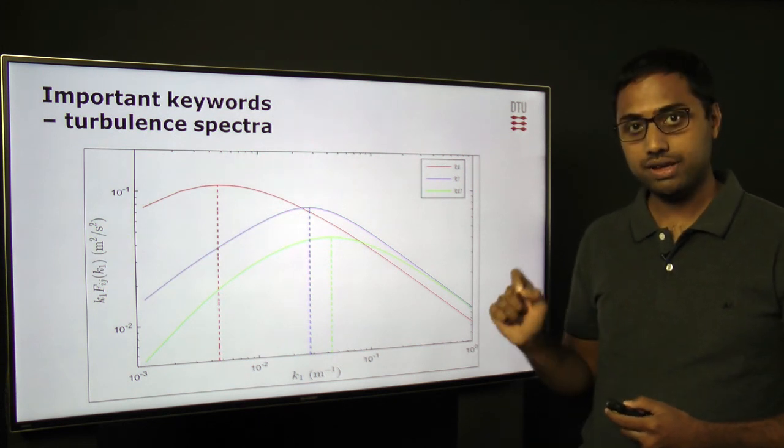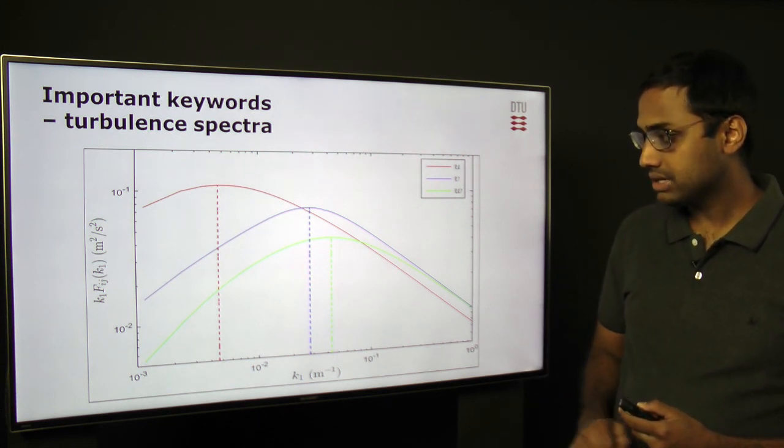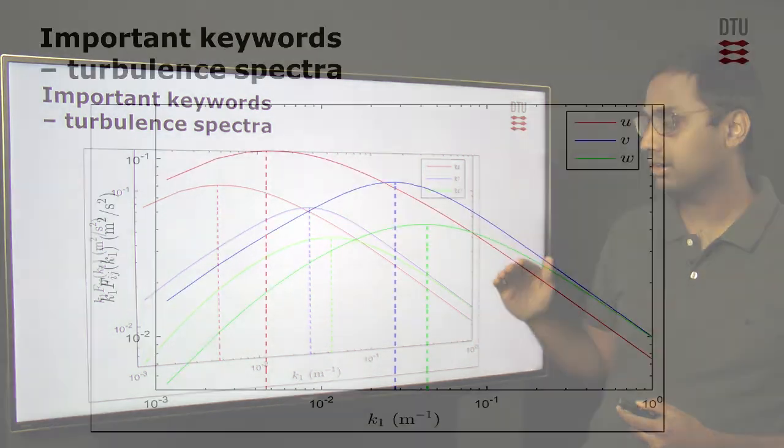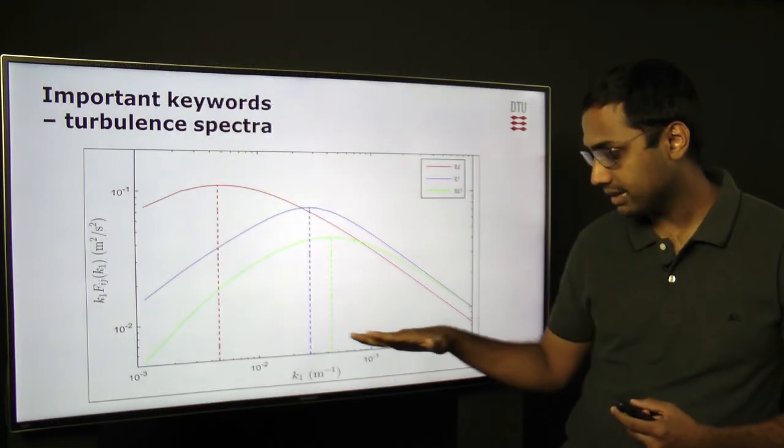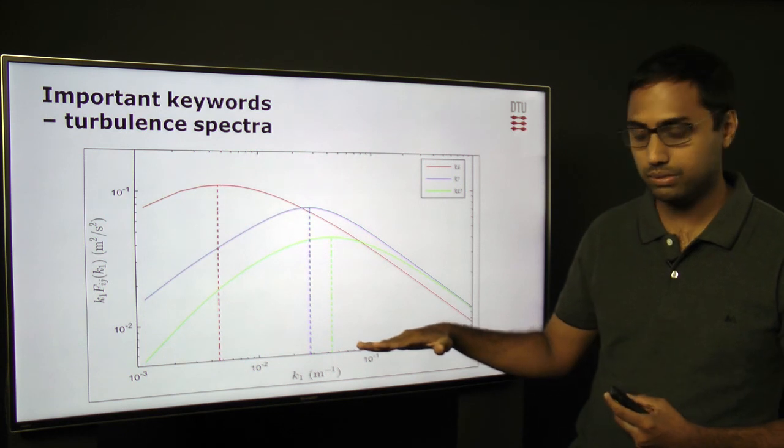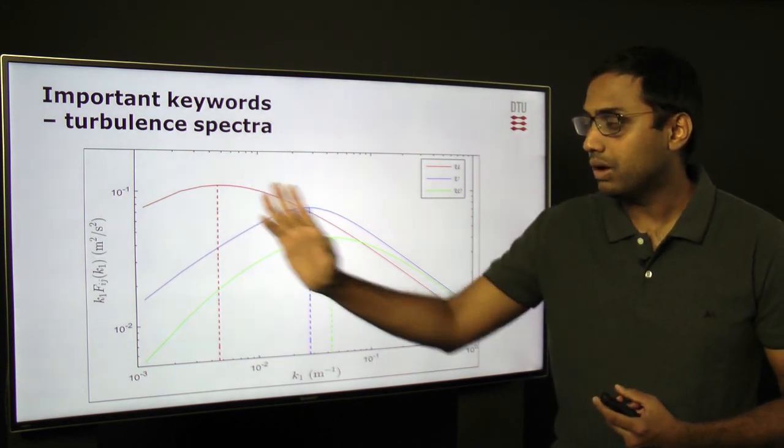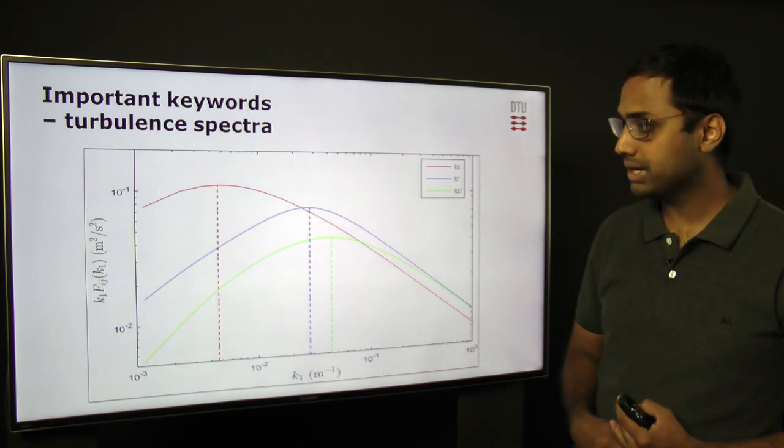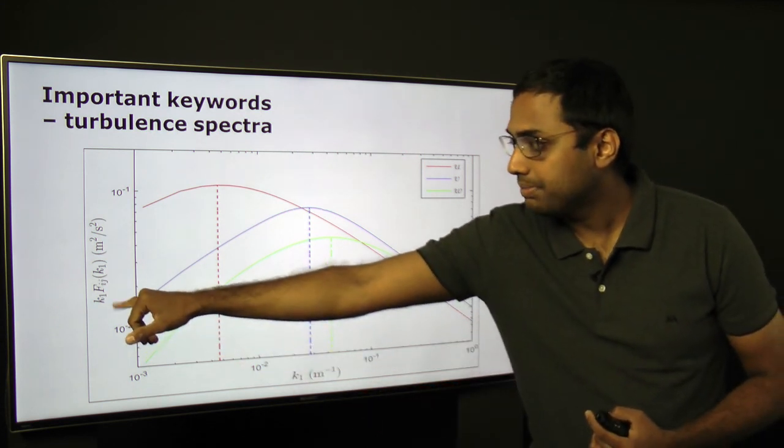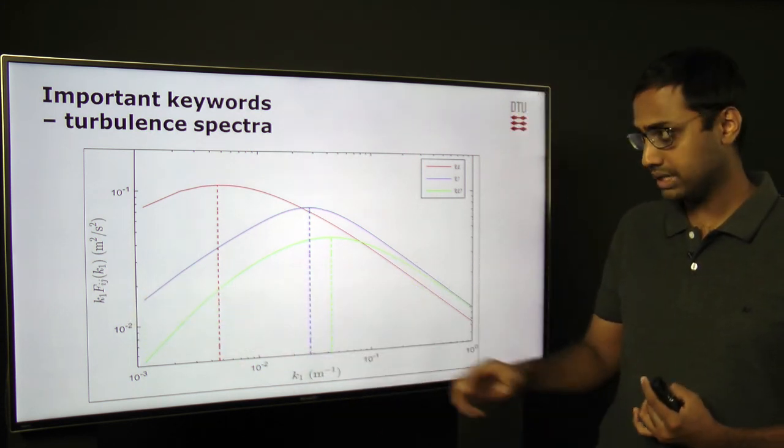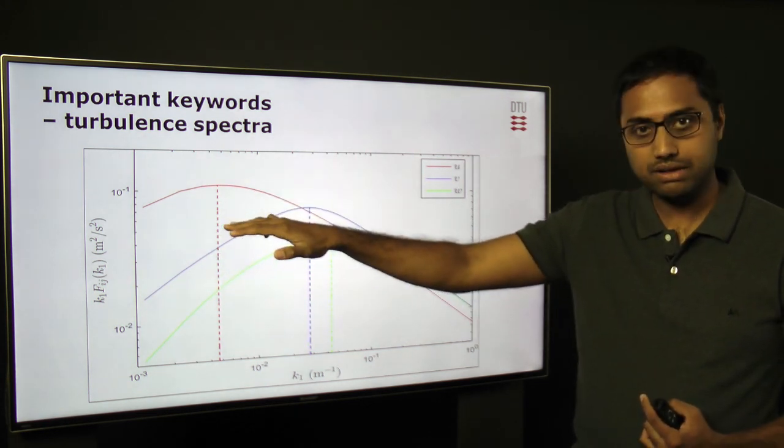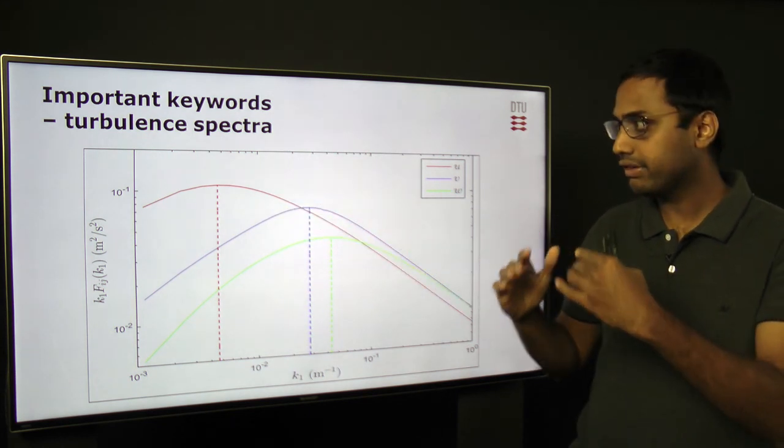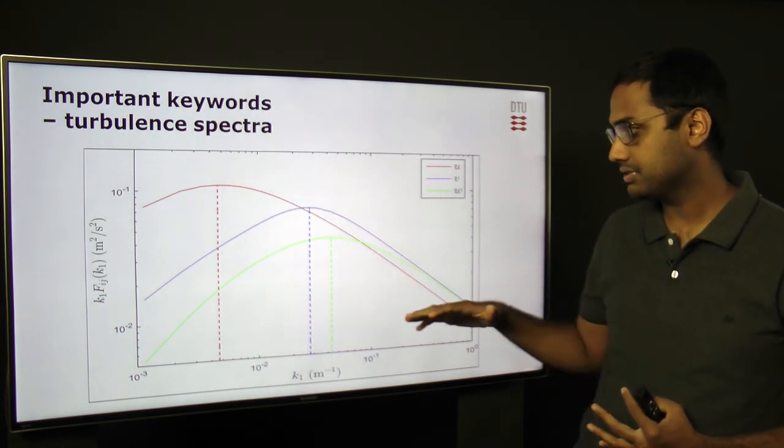Turbulence spectra is also a very important keyword that is frequently used, as mentioned before. It gives us the distribution of the kinetic energy in the wind with respect to frequency. On the x-axis you normally have the frequency or the wave number, which is the inverse of the wavelength. On the y-axis we normally have the pre-multiplied spectrum multiplied by the wave number or the frequency. The pre-multiplication is done to get the peak in the spectra very clearly, otherwise it's very difficult to see where the peak energy lies.